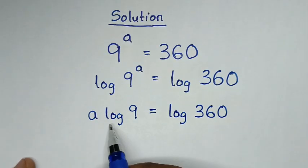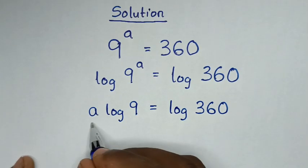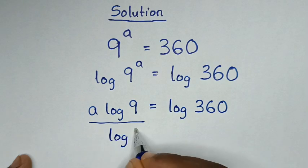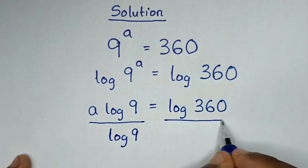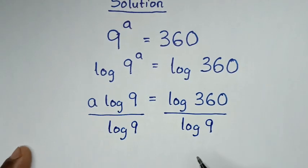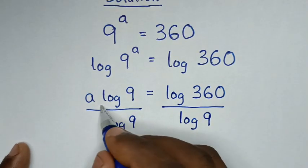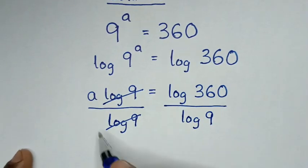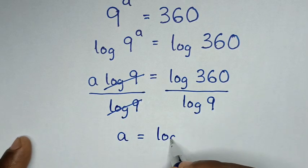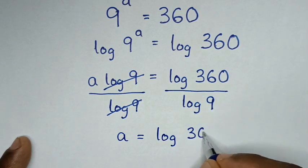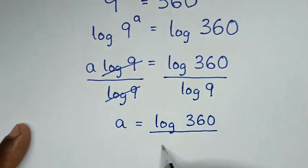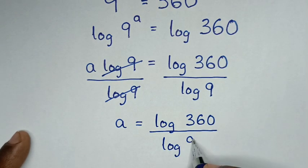Then we will divide by log of 9 in both sides, so here it will be over log of 9 on both sides. Then it will be a is equal to log of 360 over log of 9.